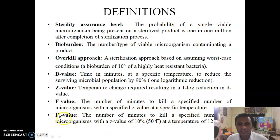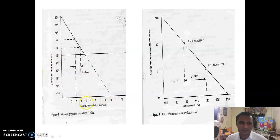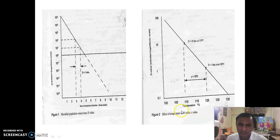The F₀ value is the number of minutes to kill a specified number of microorganisms with a Z-value of 10 degrees Celsius at 121 degrees Celsius. Looking at the graphs: the first graph shows D-value, with time of exposure in minutes on the x-axis and population on the y-axis. The second graph shows the effect of temperature on D-value and Z-value.